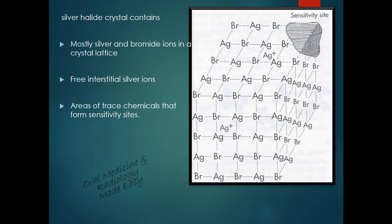The silver halide crystal consists of mostly silver and bromide ions arranged in a crystal lattice. It also consists of some free interstitial silver ions — these are positively charged silver ions lying freely within the crystal lattice. Some trace chemicals like sulphur are also present, which form the sensitivity site. So impurities like sulphur are added to the silver halide crystal to act as sensitivity sites.